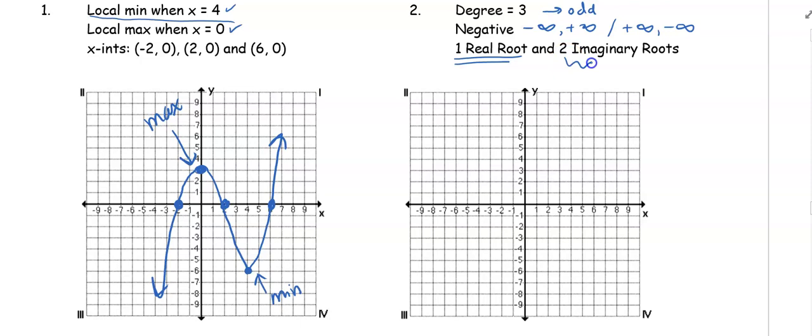One real root and two imaginary. So when I draw this graph I can only have one x-intercept even though it's a third degree polynomial.